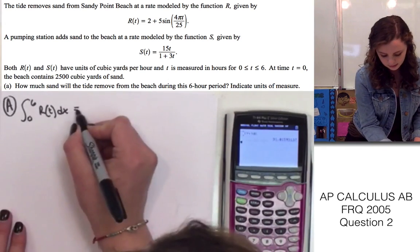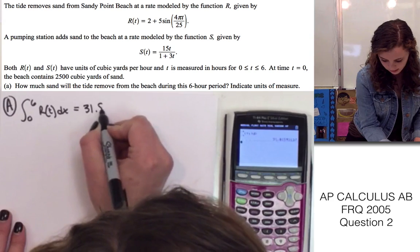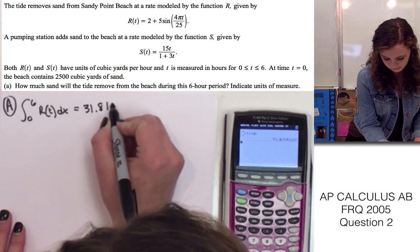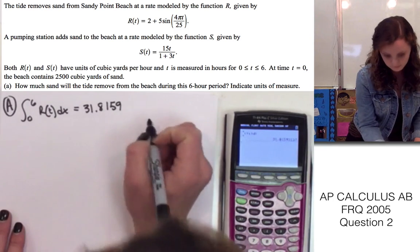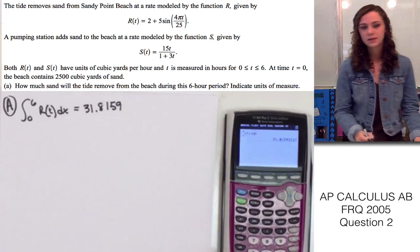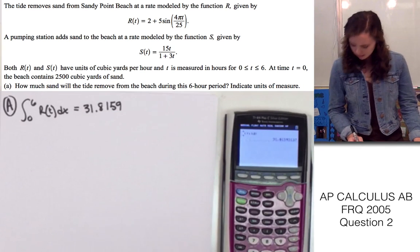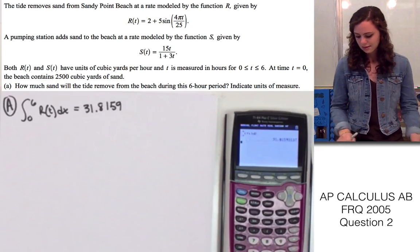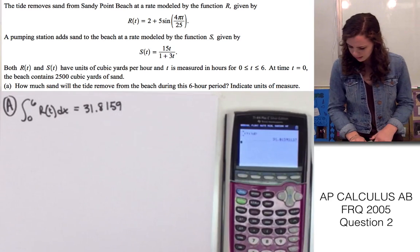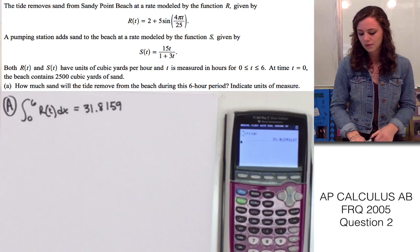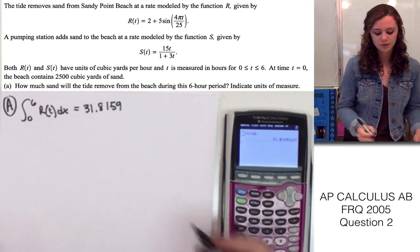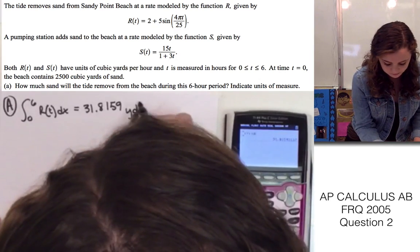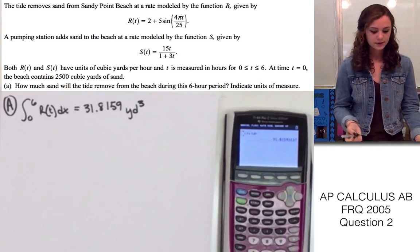And the answer is 31.8159. And that's going to be yards cubed, because it says in the beginning that it's measured in yards per hour, and since it's volume, it's going to be yards cubed. That's part a.